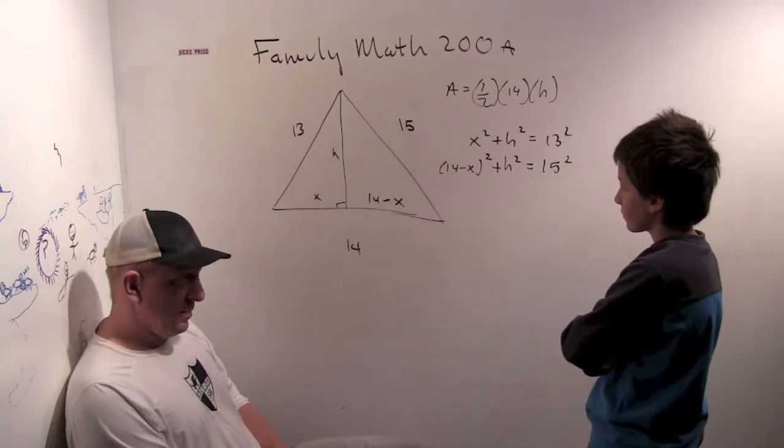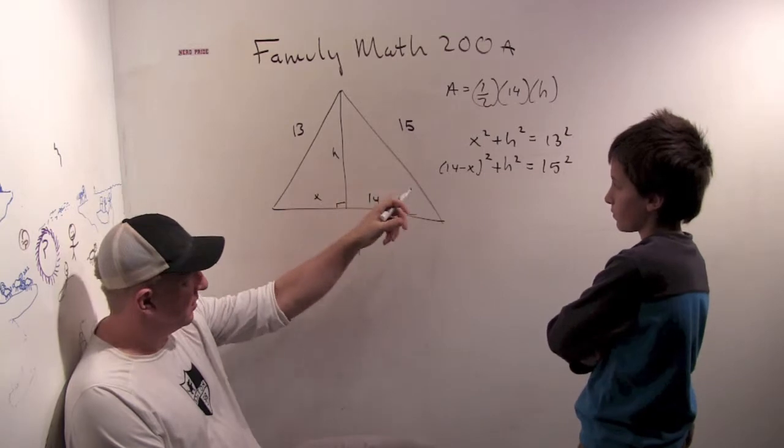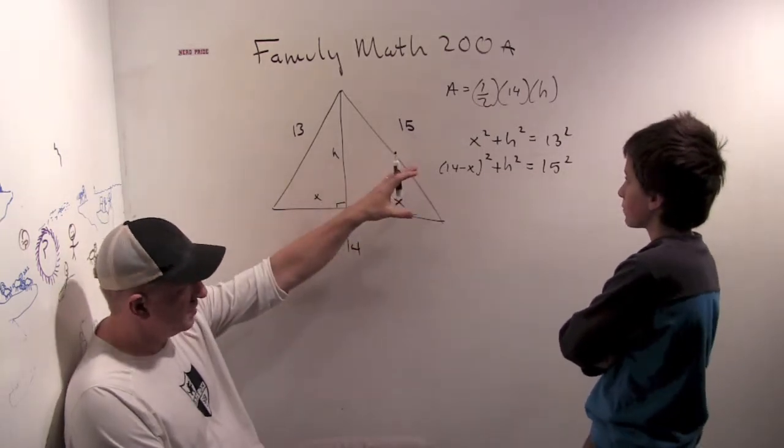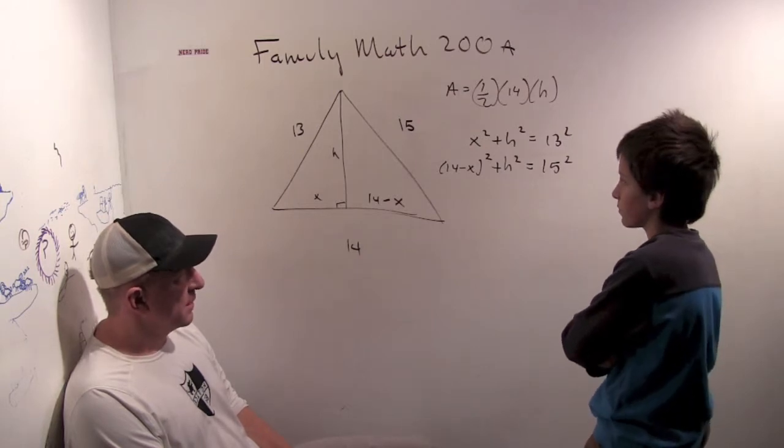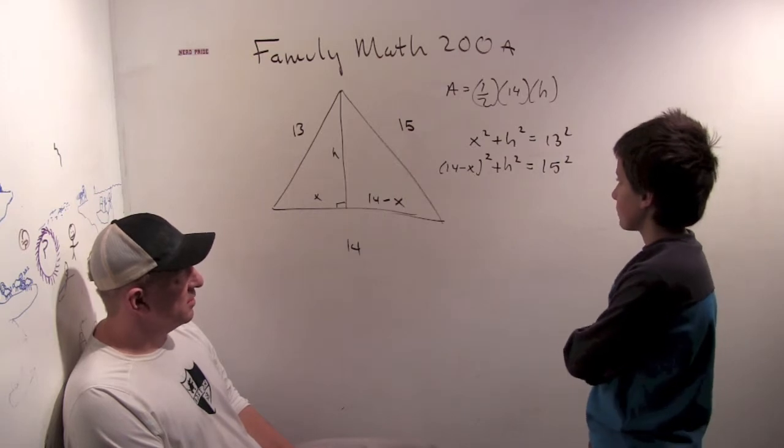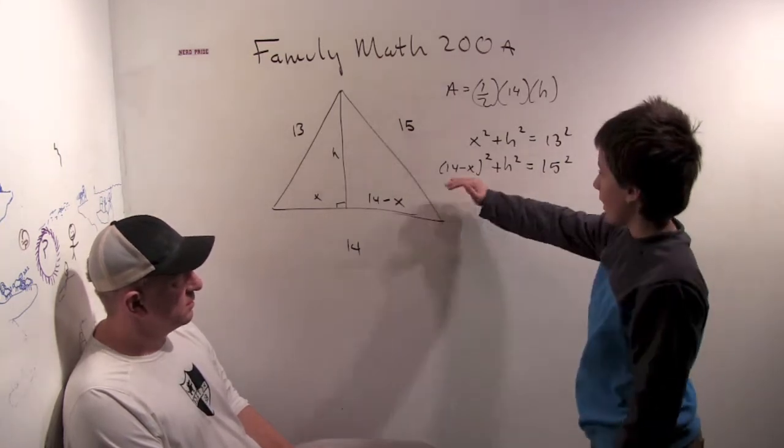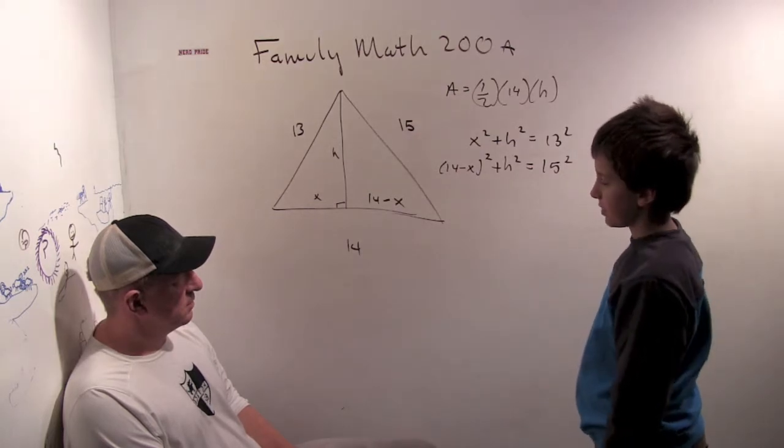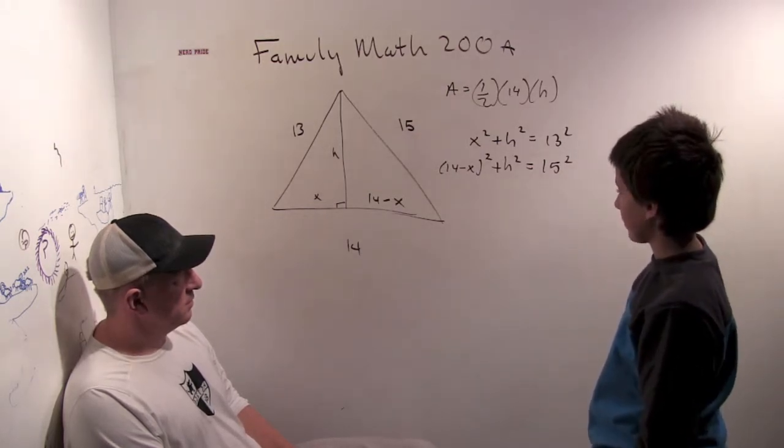So, most of the time, not all the time, but most of the time when you have two variables and two equations, most of the time you can solve them. What do you think would be a good approach to solving these equations? Well, maybe we could add them together and see what we get. Actually, subtracting them would be better.